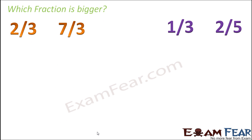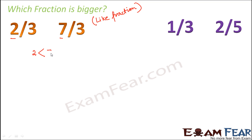Now, how do we compare two fractions? On the screen you see fractions like 2 by 3, 7 by 3, 1 by 3, and 2 by 5. The first scenario is where we have the same denominator — these are called like fractions. So 2 by 3 and 7 by 3 are like fractions. Since the denominator is already the same, the fraction with a bigger numerator is bigger. Here one numerator is 2 and the other is 7; since 7 is greater than 2, therefore 7 by 3 is greater than 2 by 3.